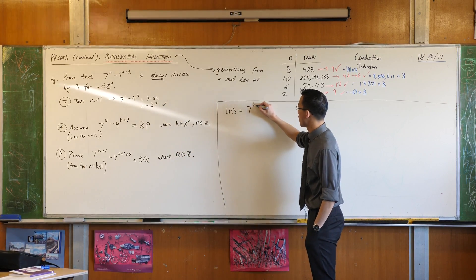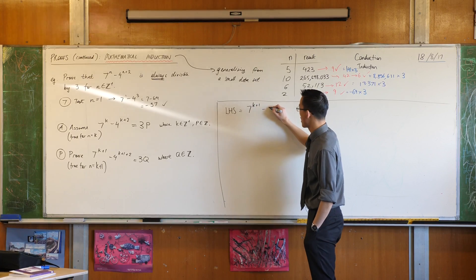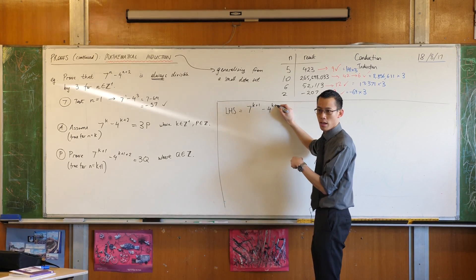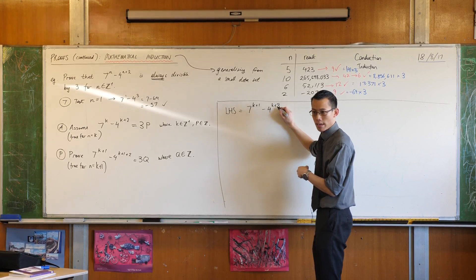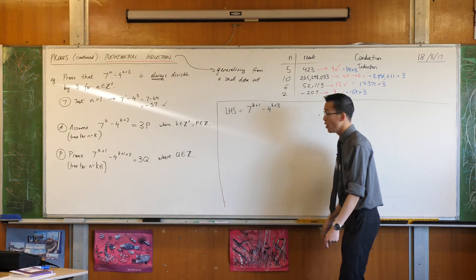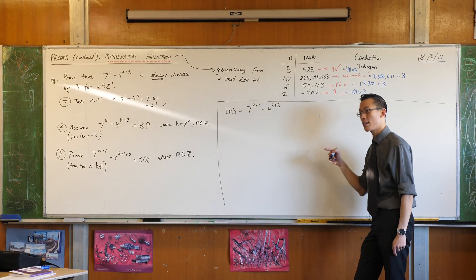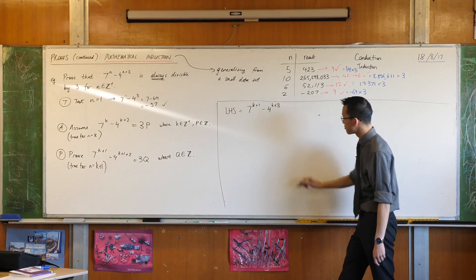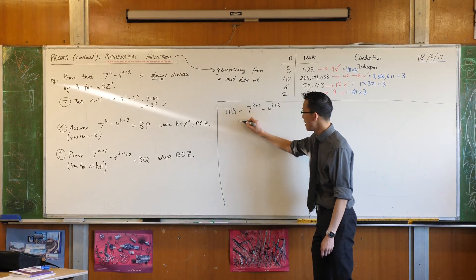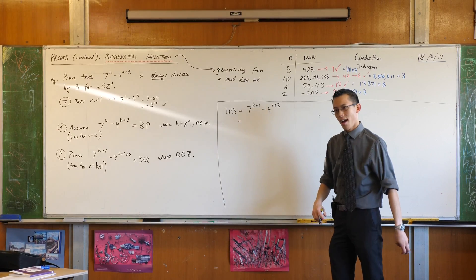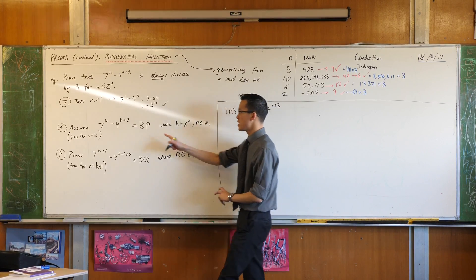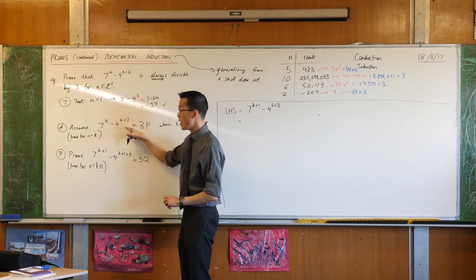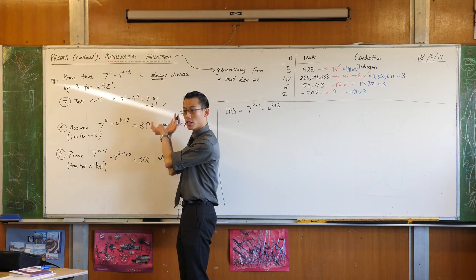This is 7 to the power of k plus 1 minus 4 to the k plus 1 plus 2 is 3. So that's the left-hand side of the statement I want to work with. Now I want to use this fact here, because I've assumed that it's true.